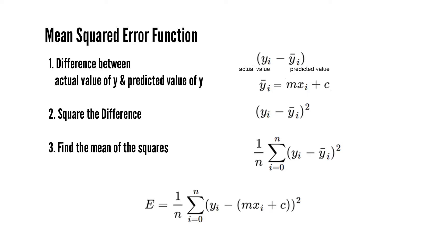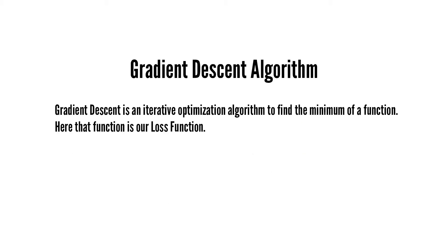In the MSE equation, y is the actual value and y-bar is the predicted value, and if we substitute mx + c for y-bar we get our full loss function. Now that we've defined the loss function, let's get into the interesting part — minimizing it to find m and c. The gradient descent algorithm is an iterative optimization algorithm to find the minimum value of a function, and here that function is our loss function.